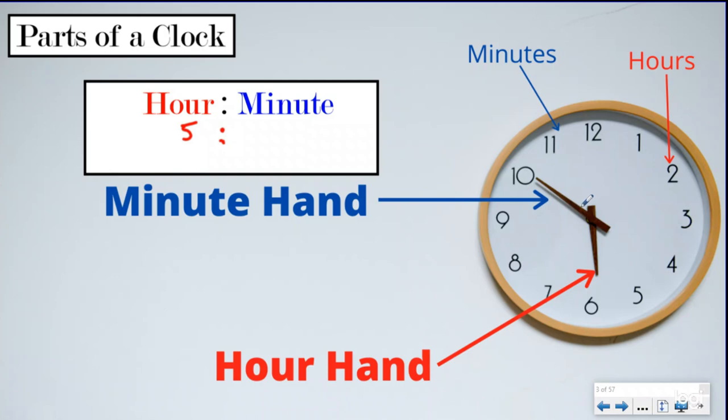And our minute hand looks like it's pointing directly at the 10. So if I start at 12, which is going to be 0, and I go 5, 10, 15, 20, 25, 30, 35, 40, 45, 50. And again, it looks like it's pointing directly at that, which means our minutes are 50. So our time is 5:50.